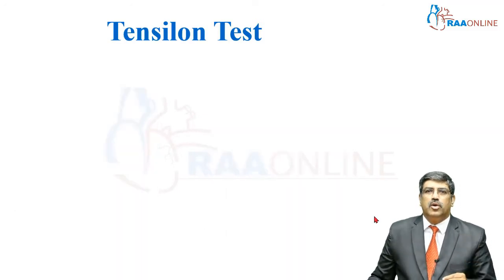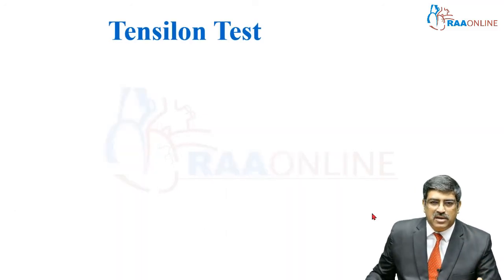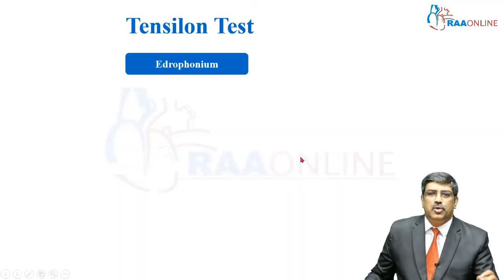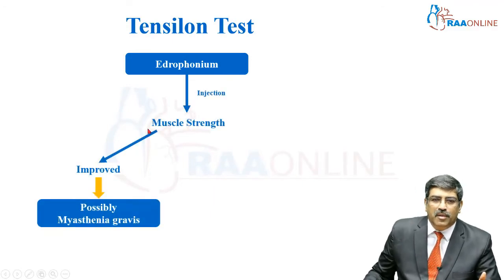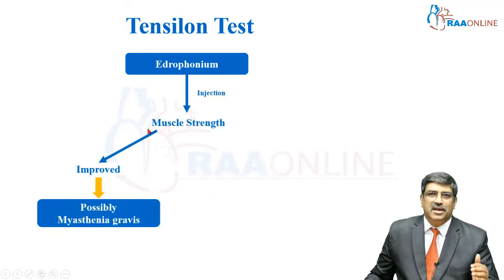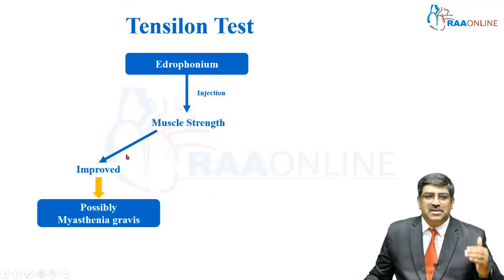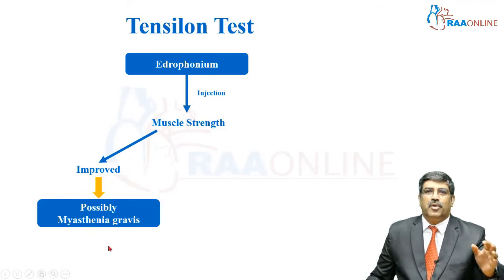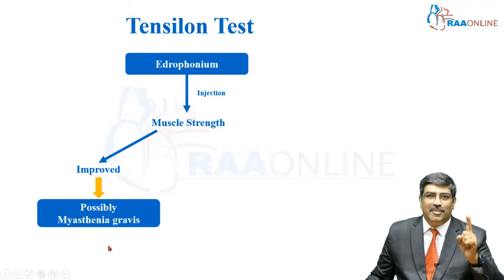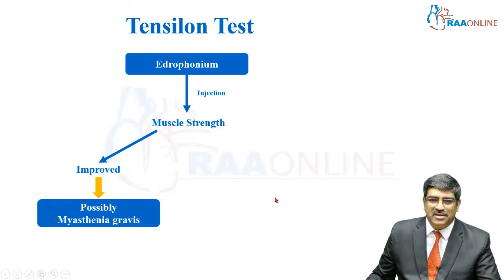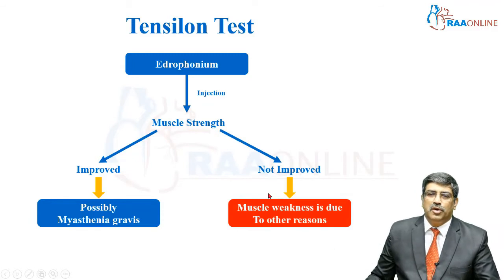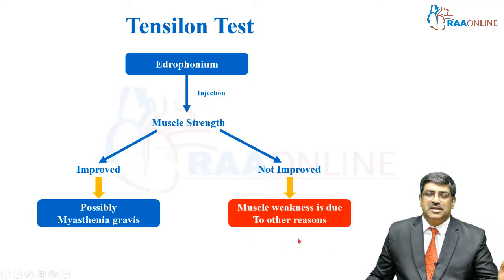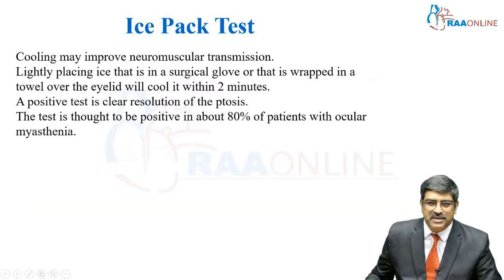How do you interpret the tensilon test? You give edrophonium and look for muscle strength. If the muscle strength is improved, it is possibly myasthenia gravis. If the muscle strength is not improved, you have to look for other reasons for muscle weakness.